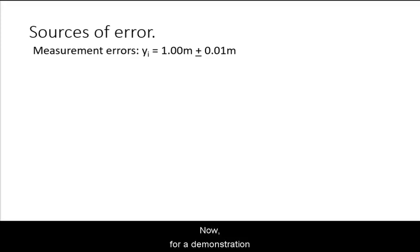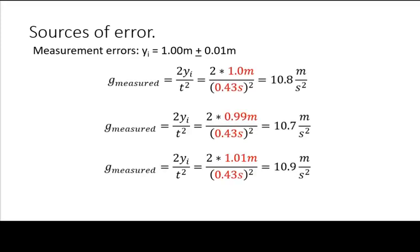Now for a demonstration on identifying significant sources of error. This video will not take you through all sources, but merely demonstrate it on one. Consider the possible error that either the height measurement or the person accurately dropping from that height might have an imprecision of a full centimeter.